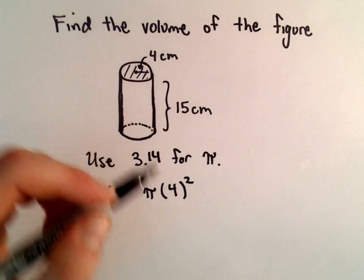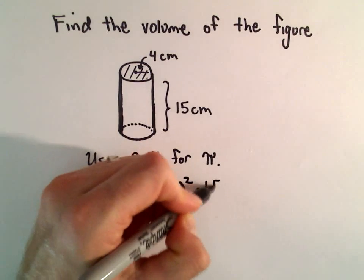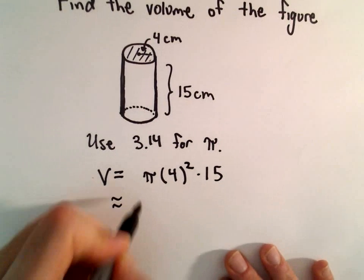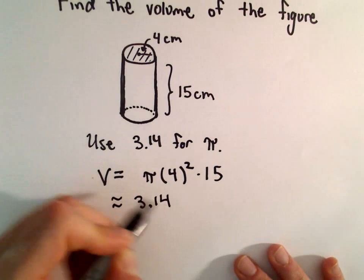And then we would multiply that by the height, which would be 15. But in this case, we're approximating pi with 3.14.